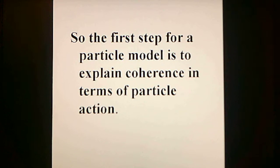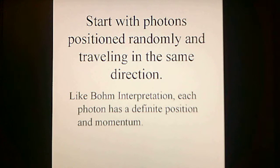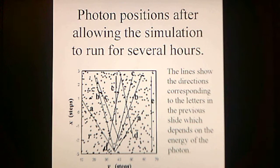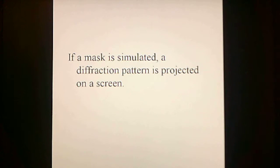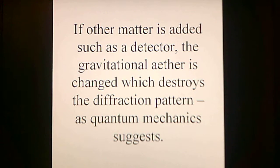The first step for a particle model is to explain coherence in terms of particle action. Starting with photons positioned randomly and traveling in the same direction — like the Bohm interpretation, each photon has a definite position and momentum — after several hours of allowing the simulation to work, we see voids starting to form, and the photons lining up on lines whose angle to the direction of motion corresponds to the labeled minima. If a mask is simulated, a diffraction pattern is projected on a screen. If other matter is added, such as a detector, the gravitational ether is changed, which destroys the diffraction pattern, as quantum mechanics suggests.